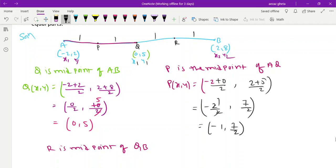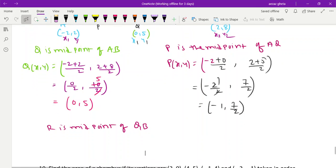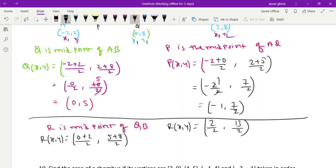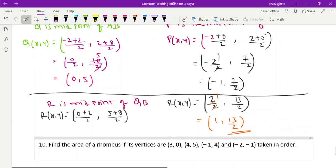And B will be x₂, y₂. So apply the formula and give me the answer. This is R(x, y): (0 + 2)/2, (5 + 8)/2. R(x, y): (0 + 2)/2, 13/2. And this 2/2 is nothing but 1. So 1 comma 13/2 is the answer. Is it clear? Understood.